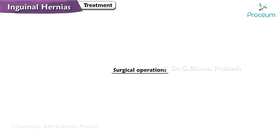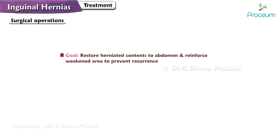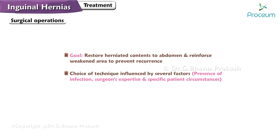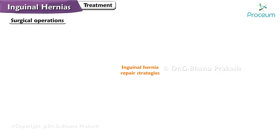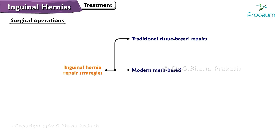Surgical operations for inguinal hernia: The overarching goal is to restore the herniated contents to the abdomen and reinforce the weakened area to prevent recurrence. The choice of technique is influenced by several factors including the presence of infection, the surgeon's expertise, and specific patient circumstances. Inguinal hernia repair strategies have evolved significantly, incorporating both traditional tissue-based repairs and modern mesh-based minimally invasive techniques.